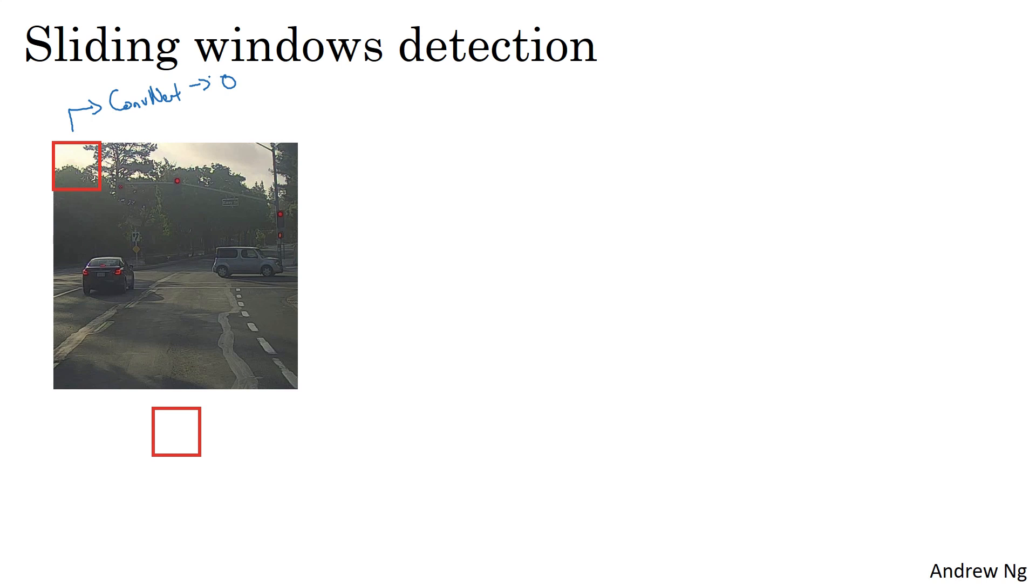In the sliding windows detection algorithm, you then pass as input a second image, now bounded by this red square, shifted a little bit over, and feed that to the ConvNet. You're feeding just the region of the image in the red square to the ConvNet, and run it again. Then you do that with a third image and so on, and you keep going until you've slid the window across every position in the image.